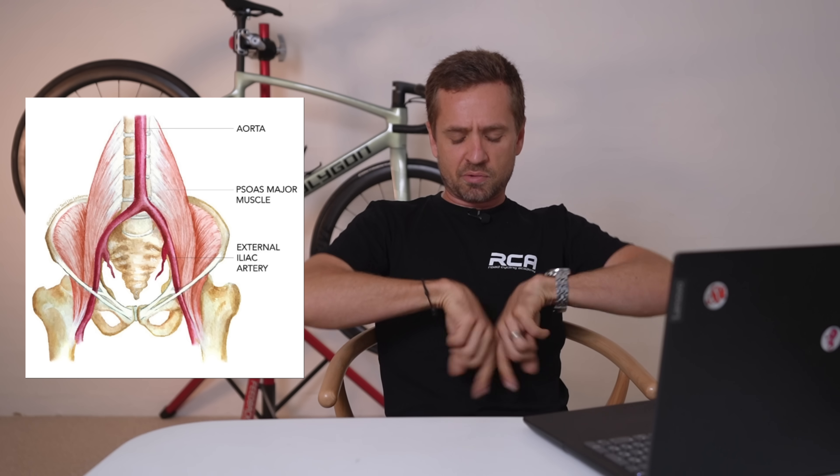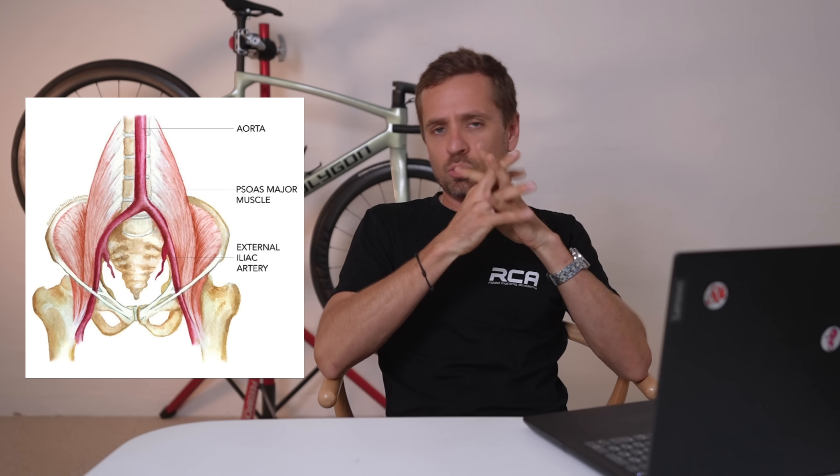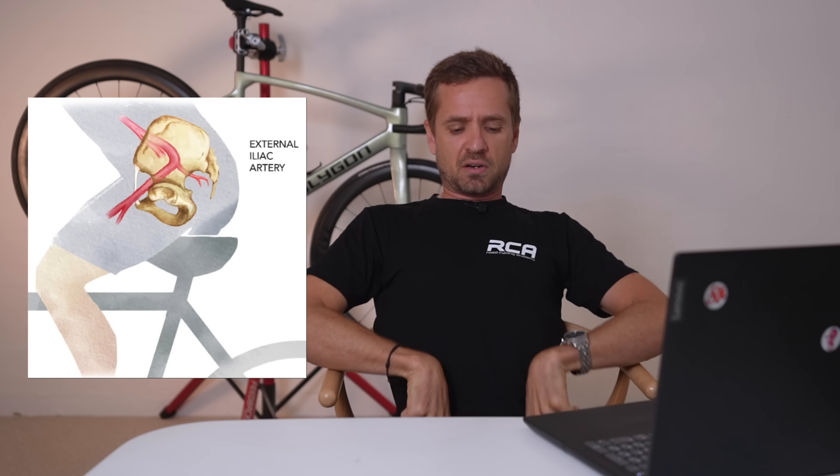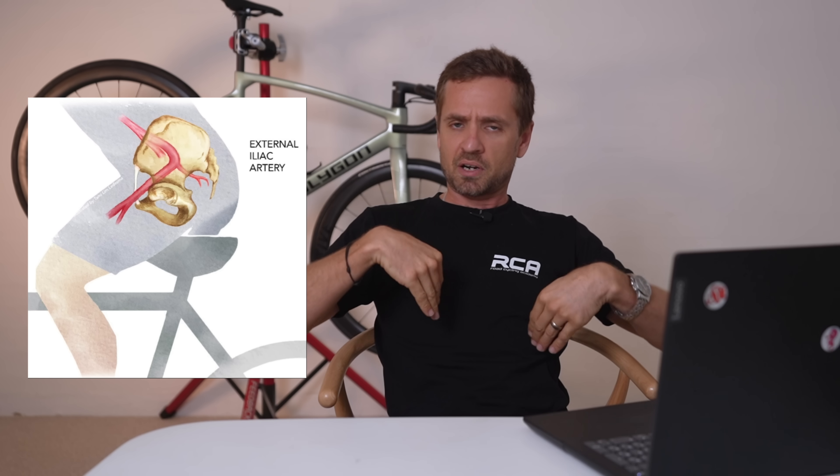The way your circulatory system works is a descending aorta comes down off your heart and it bifurcates — it splits down in the back of your guts into two different arteries called the descending iliac arteries. They split into the left and right leg. They then track across the front of your hip joint in very close communication to the front of the hip joint and right next to your hip flexor, your psoas muscle. They're really deep down on the front of the joint.